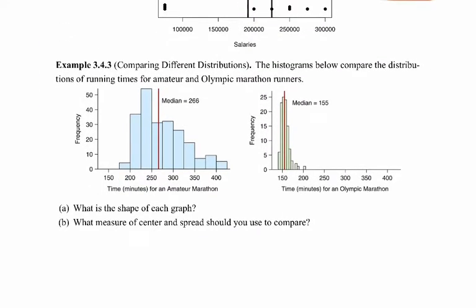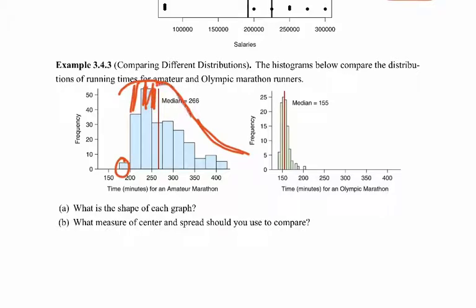Let's look at one more example: comparing different distributions. The median is always a safe bet when looking at different distributions — if you have one that's symmetric and one that's skewed, go with the median. We're looking at histograms for running times for amateur versus Olympic marathon runners. The amateur runners' graph appears right-skewed, with most data below a certain number and then tailing off.